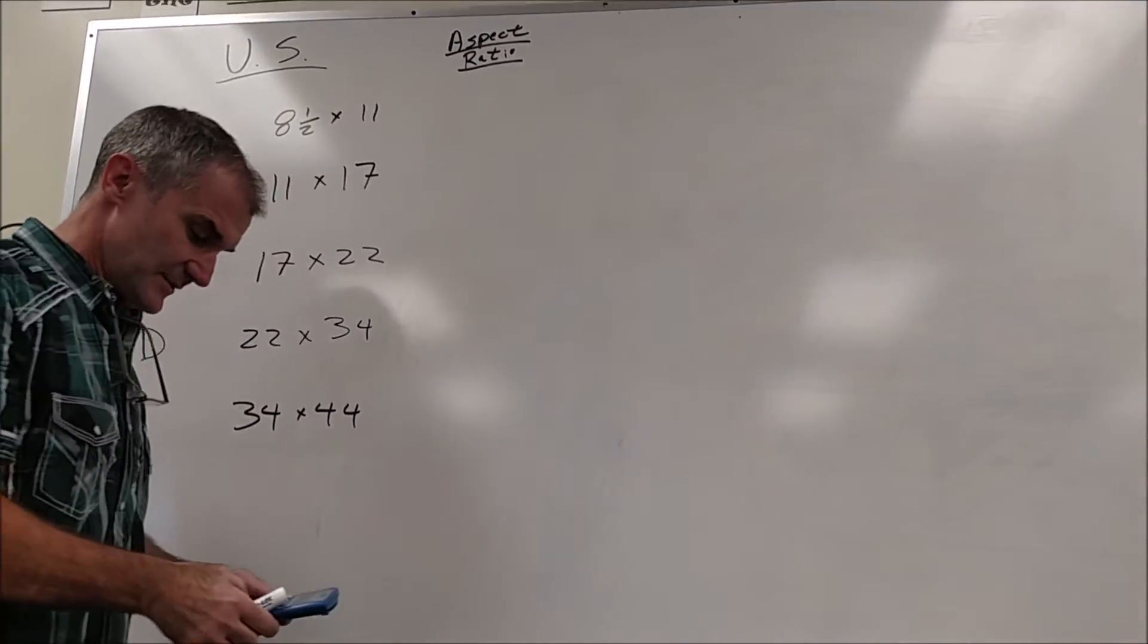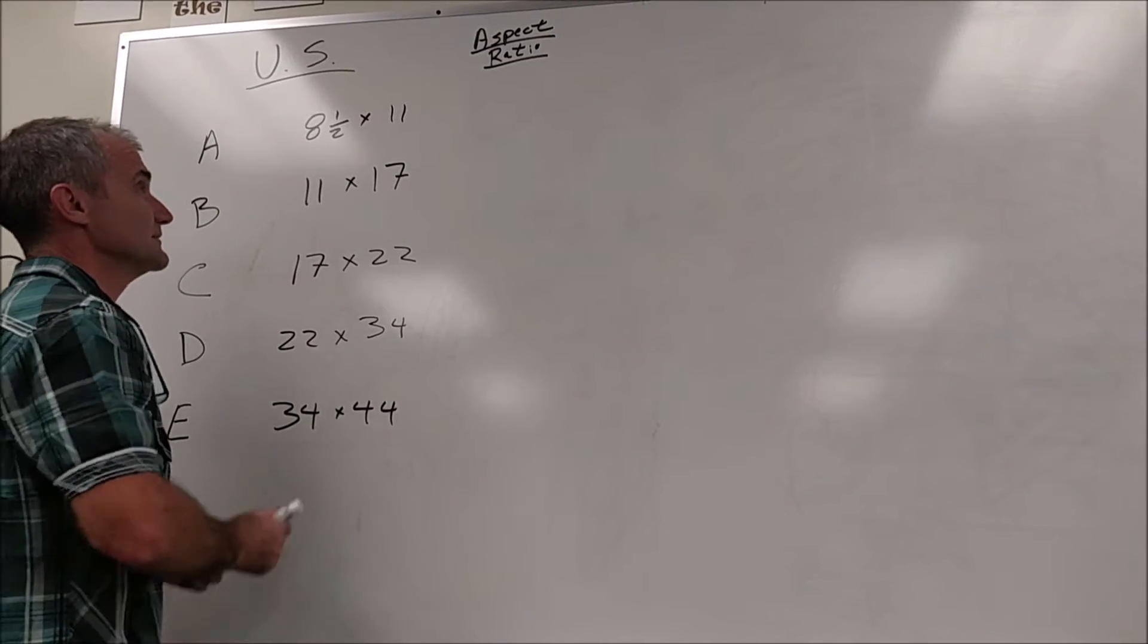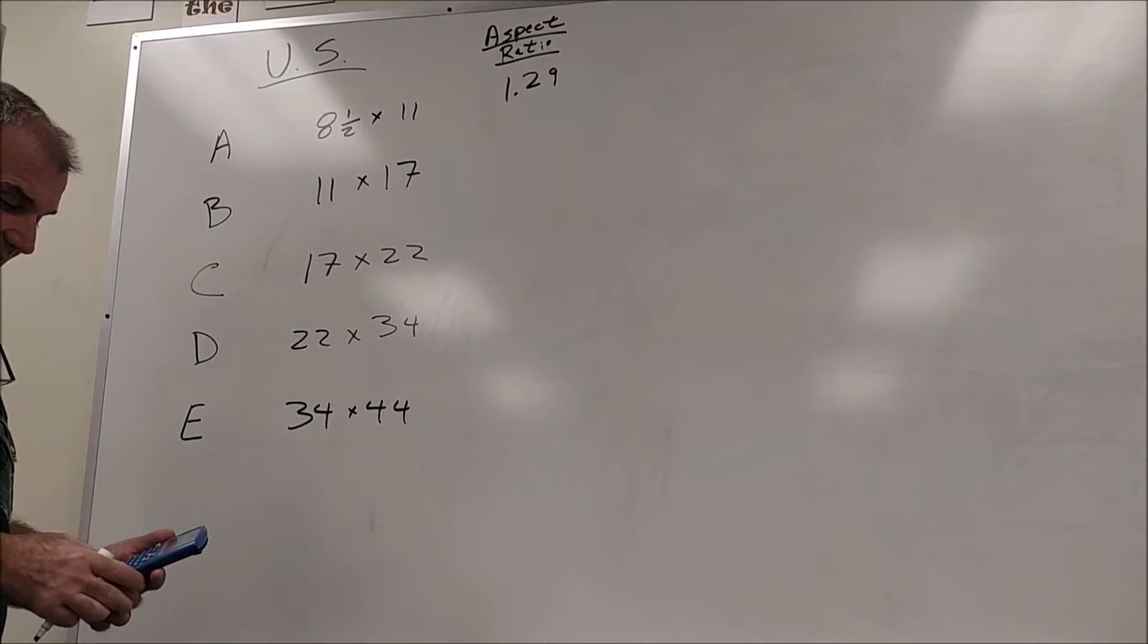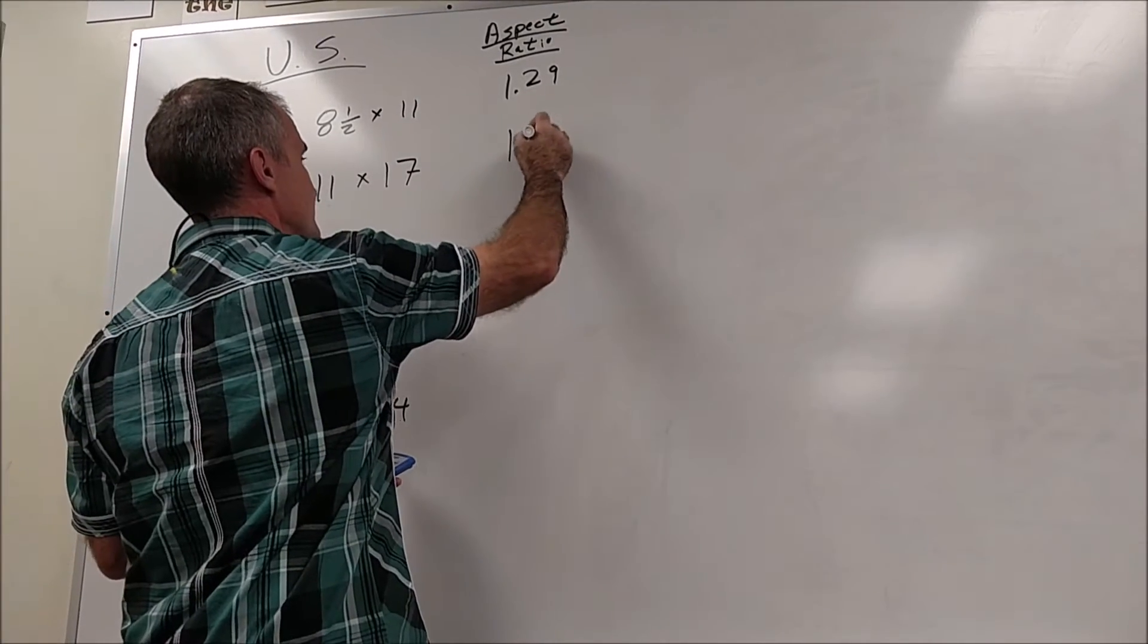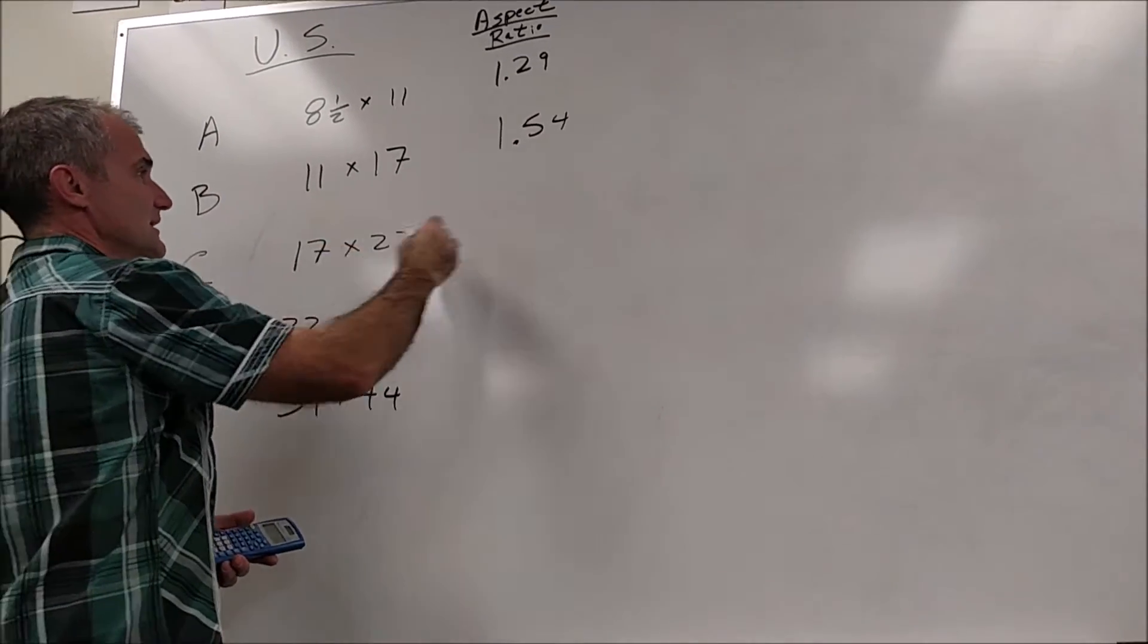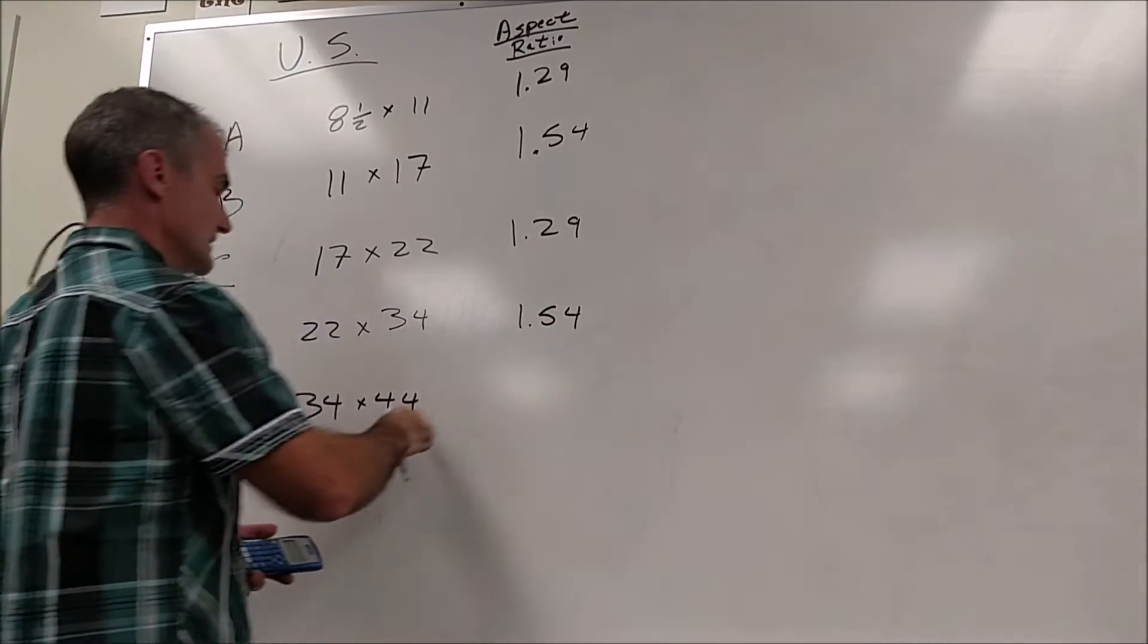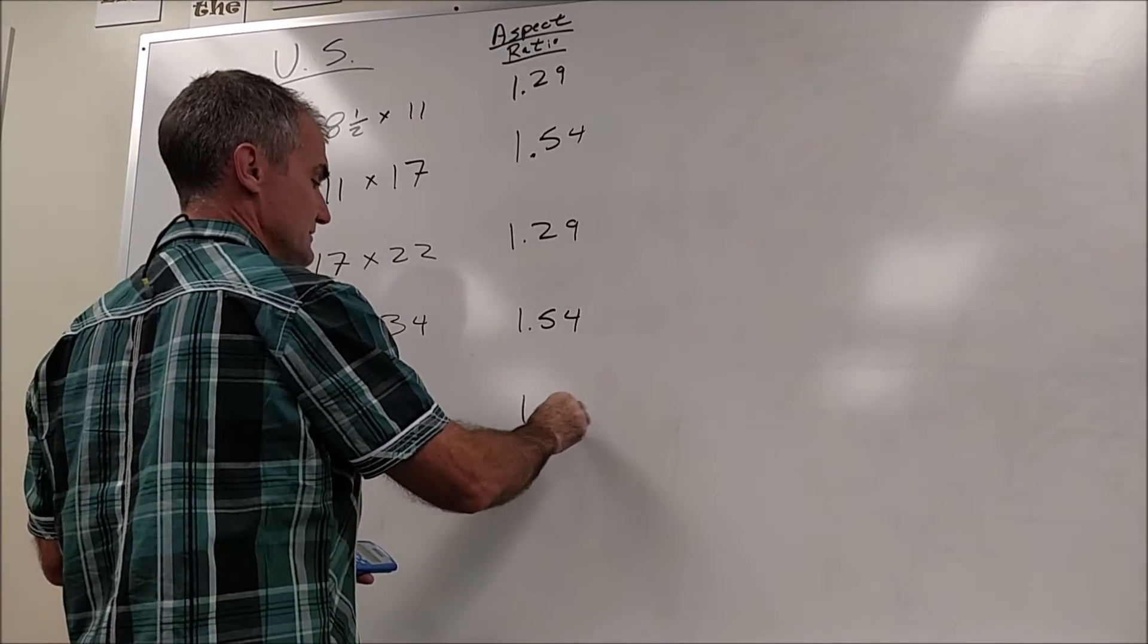Eleven divided by eight and a half and I get 1.29 and I do the same thing here. Seventeen divided by eleven is 1.54. I do that again here, 22 divided by 17 and it's 1.29. I do 34 divided by 22 and it's 1.54, and then I do 44 divided by 34 and it goes back to 1.29.